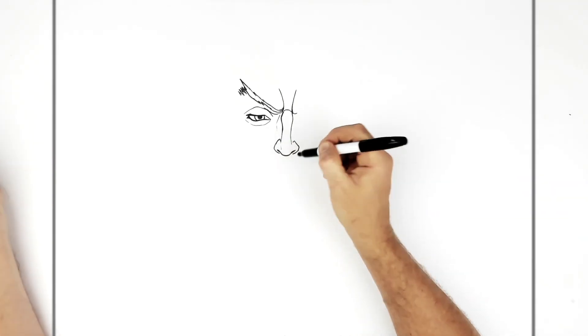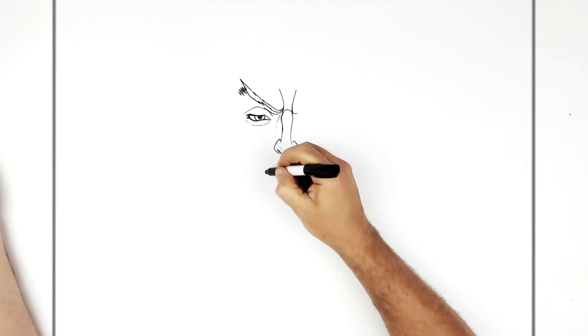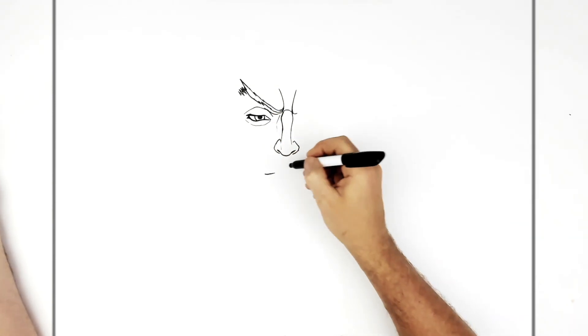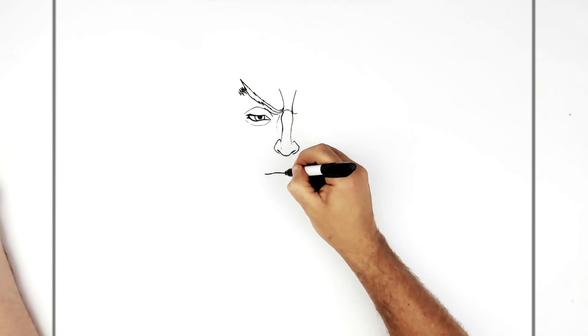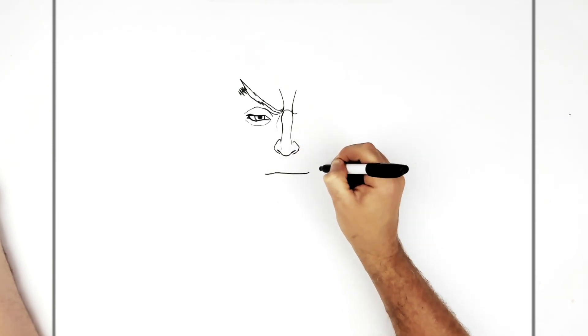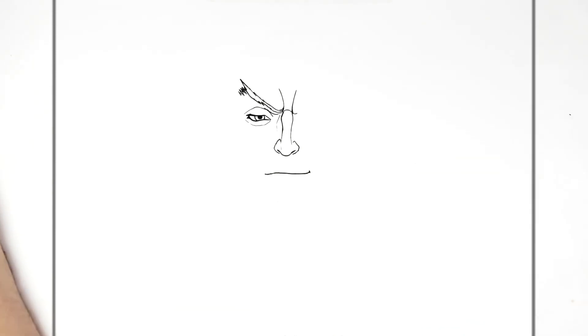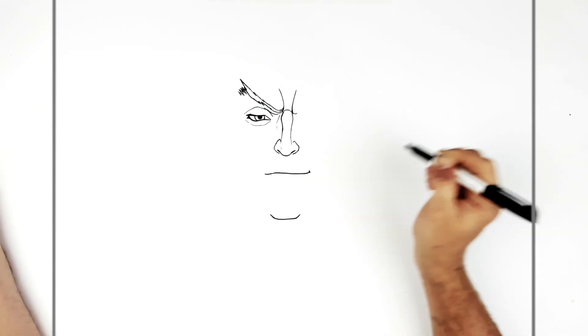His mouth then. It's kind of flatly smiling. We start underneath the pupil here, kind of like curves up at first. And then it goes fairly flat and then curves up on the corner here again. His chin pretty square, just there.